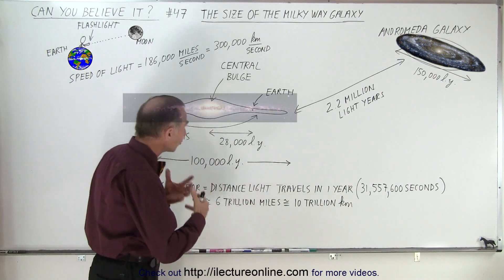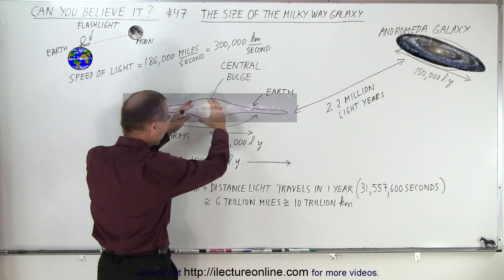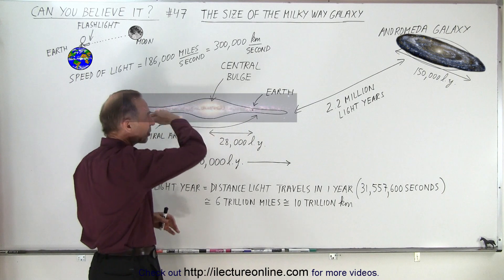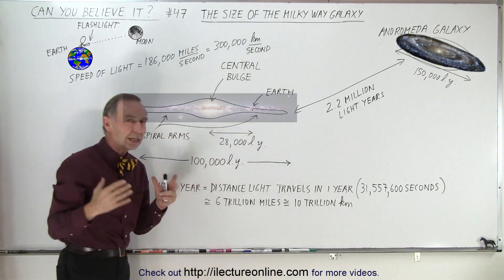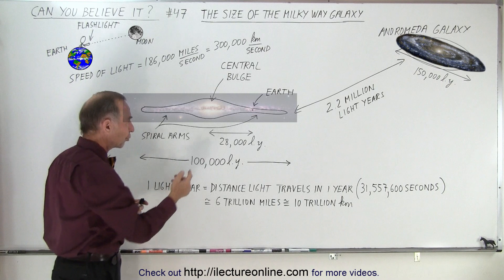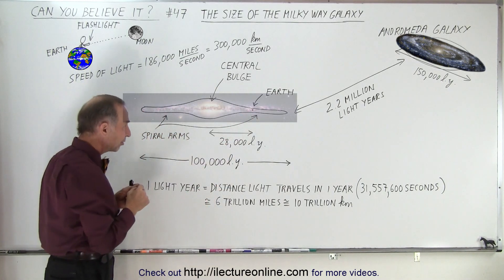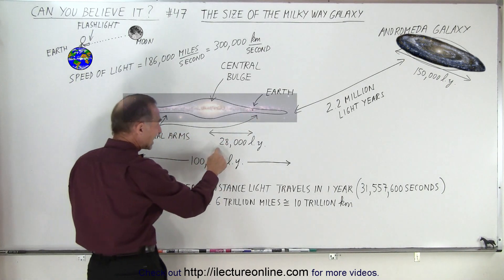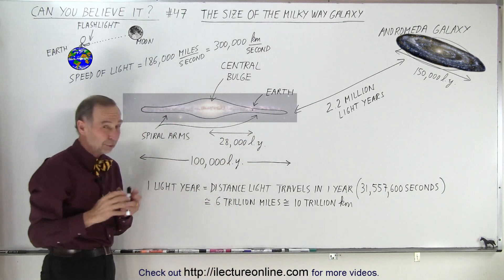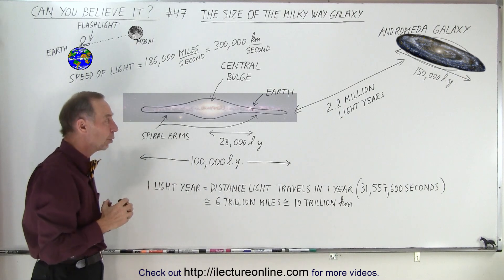The Milky Way Galaxy has a central bulge where the stars are much more dense, and then a much more flat, pancake-shaped region where the spiral arms are located. Our solar system is located in one of those spiral arms, at a distance of about 28,000 light years away from the center of the galaxy, which houses an enormously big black hole.